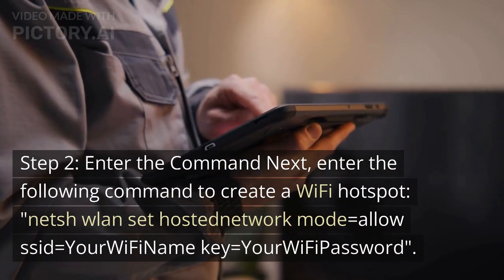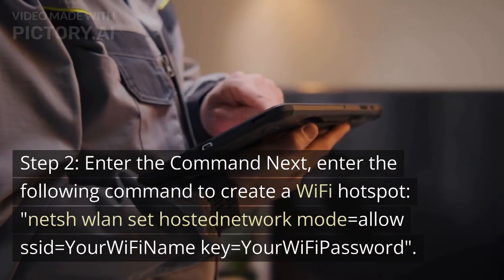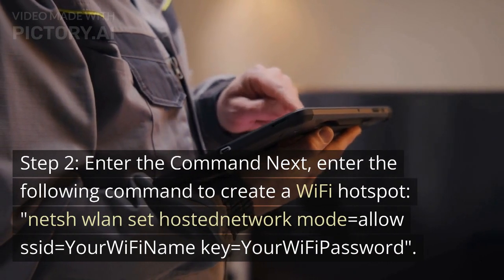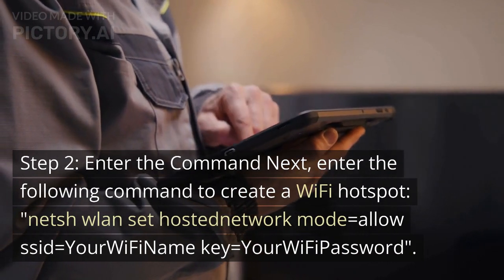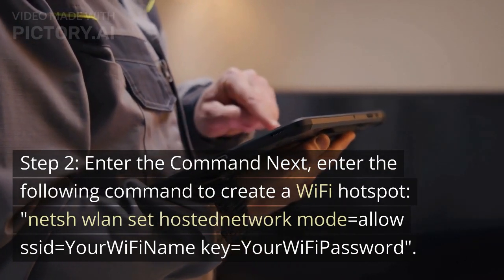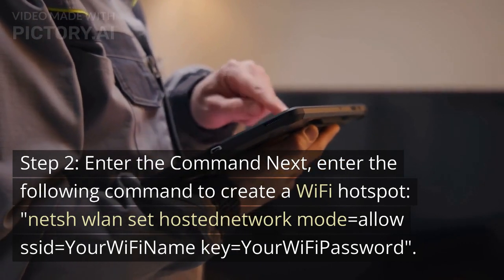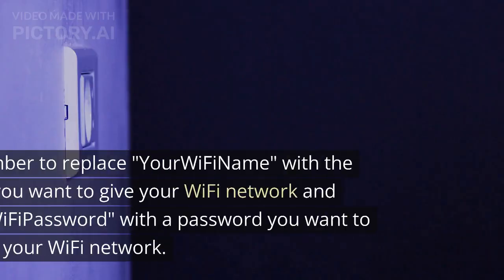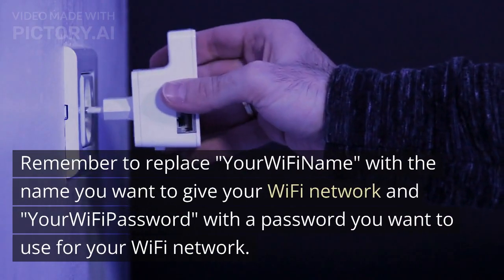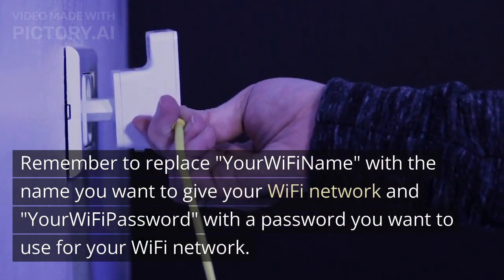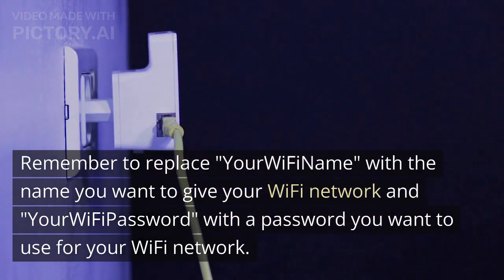Step 2: Enter the command. Enter the following command to create a Wi-Fi hotspot: netsh wlan set hostednetwork mode=allow ssid=your_Wi-Fi_name key=your_Wi-Fi_password. Remember to replace 'your Wi-Fi name' with the name you want to give your Wi-Fi network, and 'your Wi-Fi password' with the password you want to use.